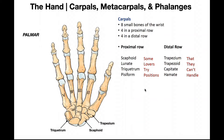Welcome back to Anatomy & Physiology on Catalyst University. In this video, we're going to be discussing the bones of the hand, and we're going to see that we can divide up the bones of the hand into three groups.